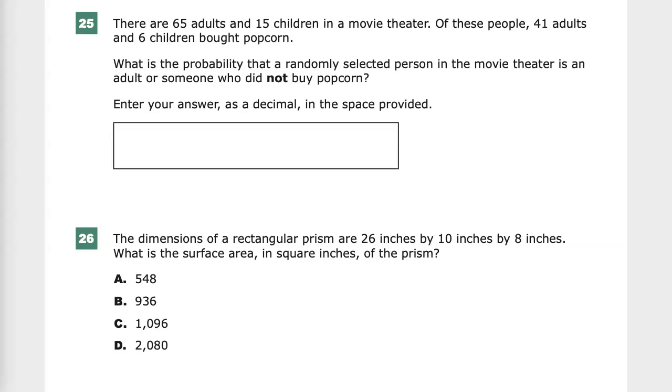This is question 25 in the Integrated Math 2 practice test for TNReady. The question says, this is a calculator allowed section I meant to say, this question says there are 65 adults and 15 children in a movie theater.